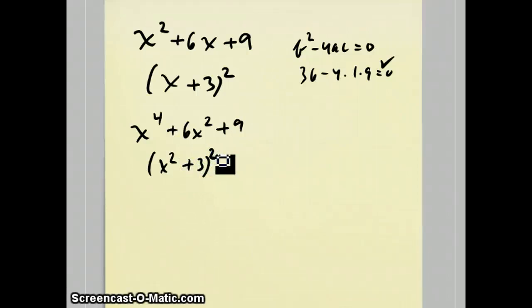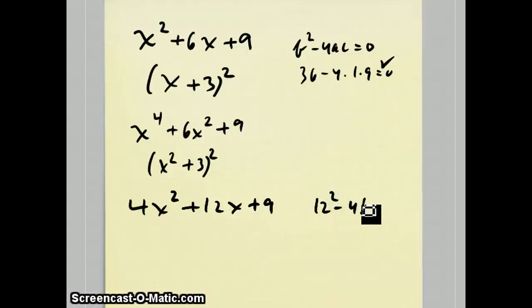Sometimes the a value is not 1, and this still works. For instance, if my polynomial is 4x^2 + 12x + 9, it is true that b^2 - 4ac does equal zero. Because of that, this factors to (2x + 3)^2. Notice how the coefficient of x is going to be the square root of the coefficient of a, and the constant is going to be the square root of the constant term.